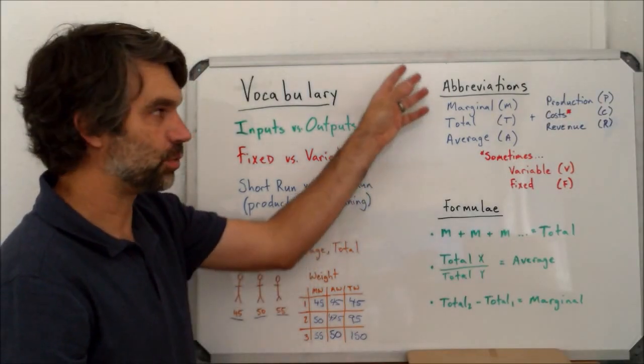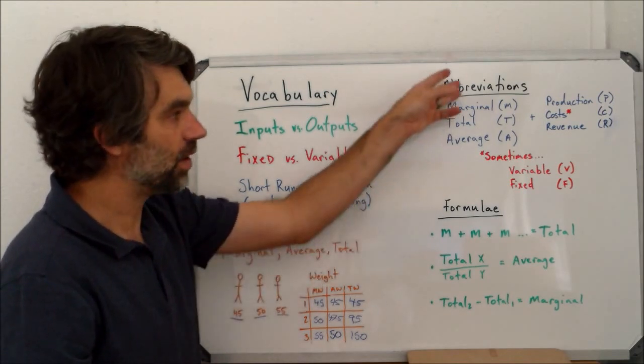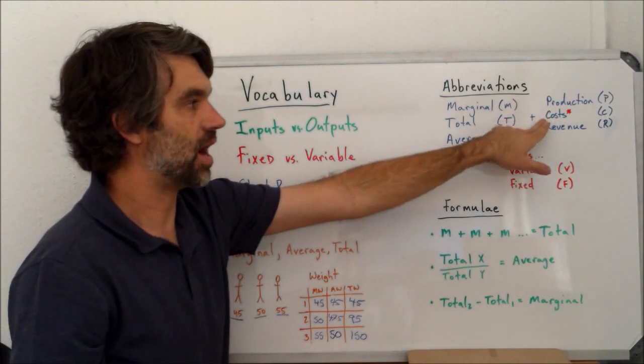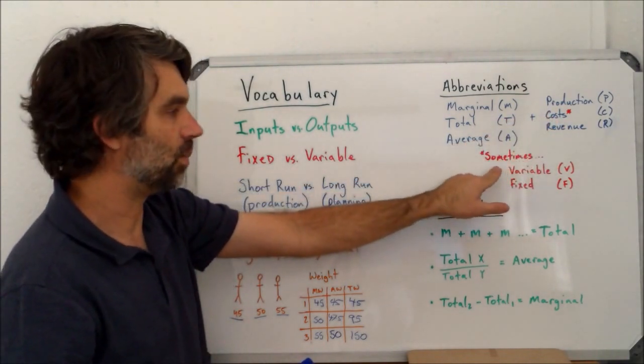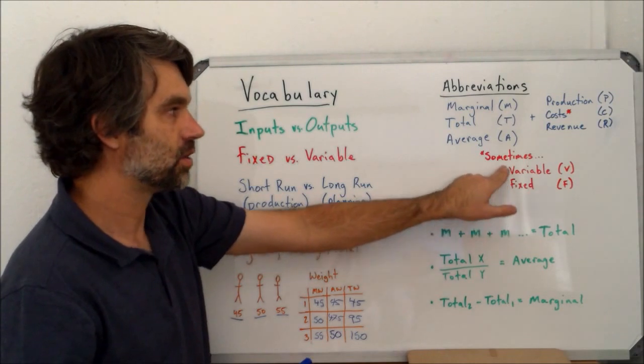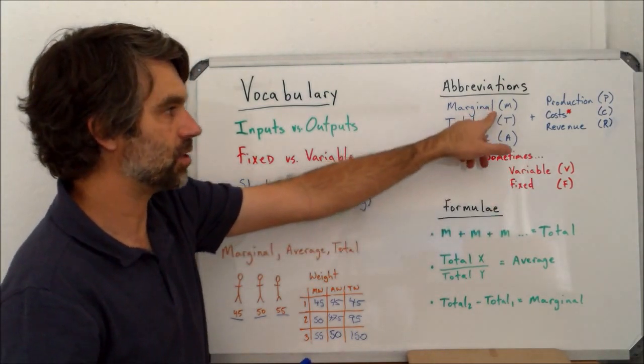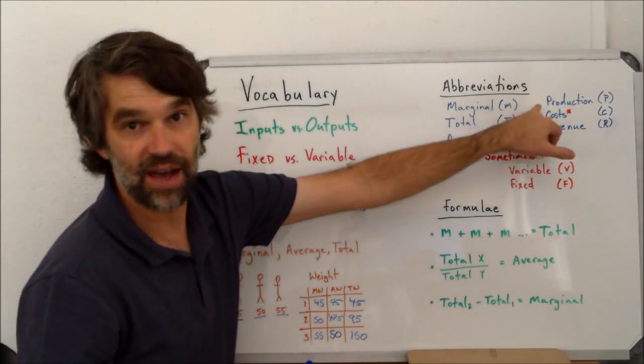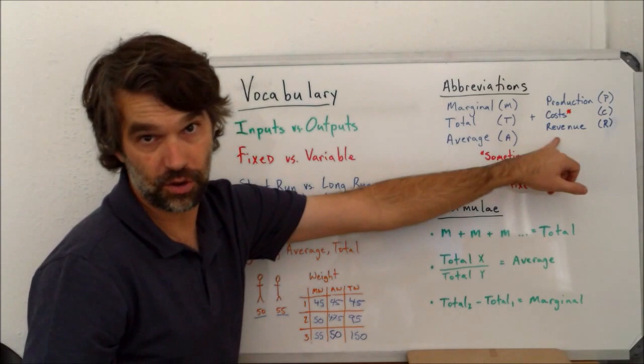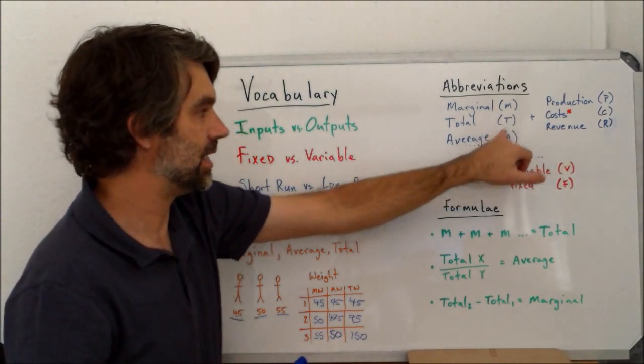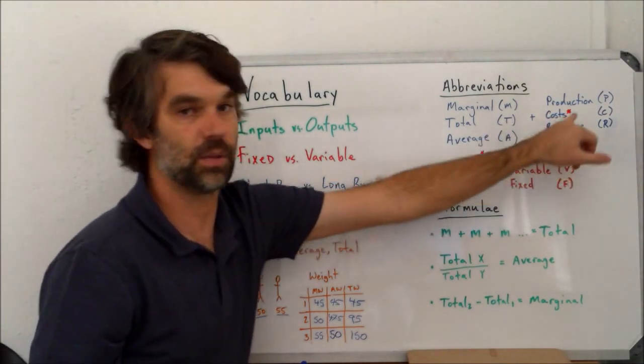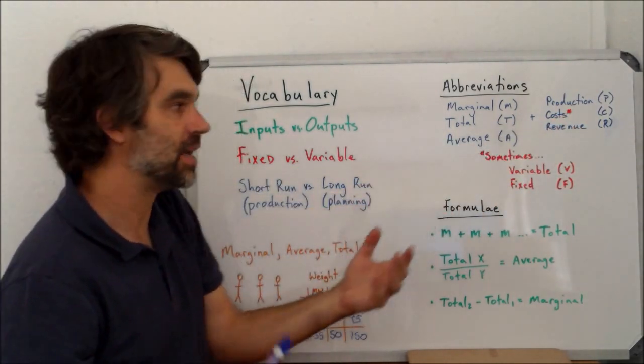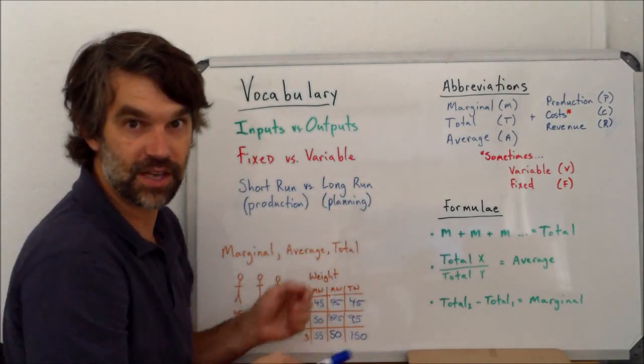During this unit, you're going to get a lot of abbreviations. Always one from this column plus another one from that column. In the case of costs, we sometimes will put this one in as well. For example, marginal production is MP. AP is average production, TR is total revenue, TVC is total variable costs, AFC is average fixed costs. You just have to be used to those and play around with them as necessary.